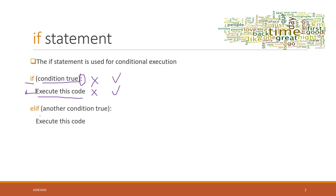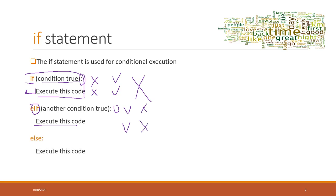We can also combine the if statement with elif. That means if the first condition is false, we compare this next part. If that's true, we execute that part. If it's false, we skip that part. Finally, if everything else is false, we execute the else block. That is the if-elif-else statement.